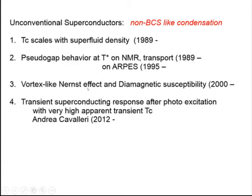We often call these unconventional superconductors. I think there are non-BCS-like condensation aspects in four different things. The first: TC scales with superfluid density — this is what we have been studying since 1989. Second is the pseudo-gap behavior at T*, first found by NMR and transport measurements in 1989 and later by ARPES experiments as well.